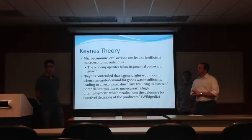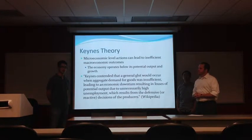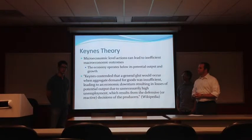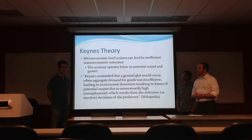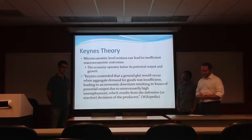The economy operates below its potential output and growth when people are not conducting efficient microeconomic-level actions. Keynes contended that a general glut would occur when aggregate demand for goods was insufficient, leading to an economic downturn resulting in losses of potential output due to unnecessarily high unemployment, which results from the defensive or reactive decisions of the producers. Basically, a general glut means when supply exceeds demand — like when Girl Scout Cookie time comes around right after the new year and everybody is on a diet, so you've got all these cookies and nobody to buy them.